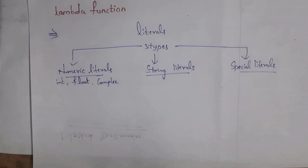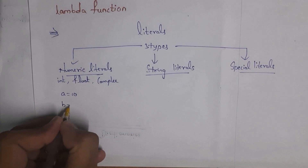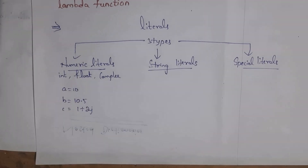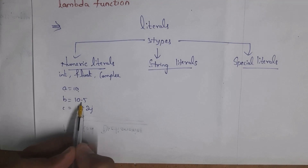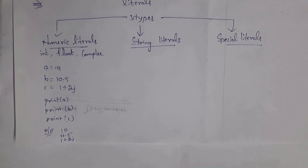Numeric literals contain integer type, float type, and complex type. For example, a = 10 where 10 is an integer value. Similarly, b = 10.5 and c = 1+2j. The values 10, 10.5, and 1+2j are the literals. When you print a, b, c you get output 10, 10.5, and 1+2j.